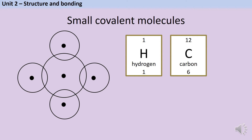Methane is another one of our examples. Carbon is in group four, so it needs to gain four electrons, whereas hydrogen still only needs one. So one carbon atom bonds with four hydrogen atoms, and there is a strong covalent bond between each pair of atoms — dot and cross, dot and cross, dot and cross, dot and cross. Now the carbon atom has access to eight electrons. We don't need to draw any more electrons on this diagram.